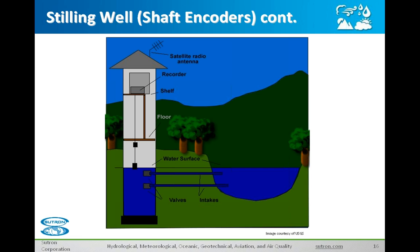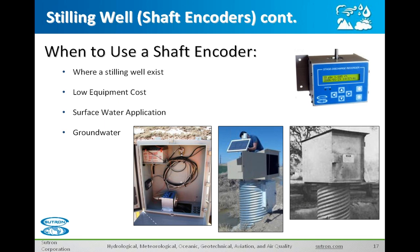This is a great way to get data. It's pretty simple and works nicely if you already have a stilling well. The next slide shows a couple of different stilling wells. There's an old picture of an old USGS stilling well, and also a picture of a stilling well being put in today's environment in Colorado. On the left you'll see inside the enclosure the hole where the shaft encoder rests, with the float and counterweight hanging inside that hole.